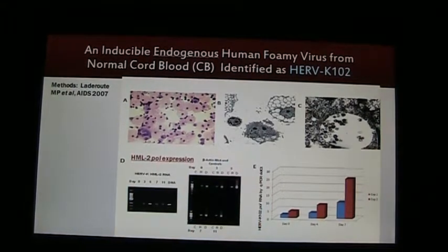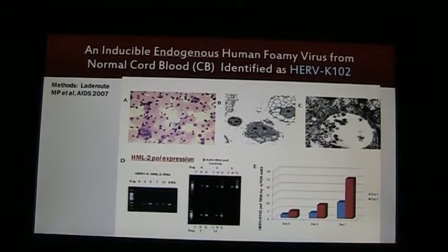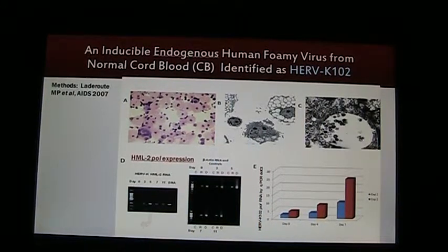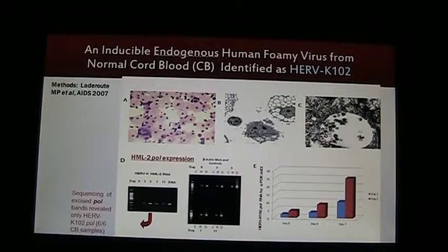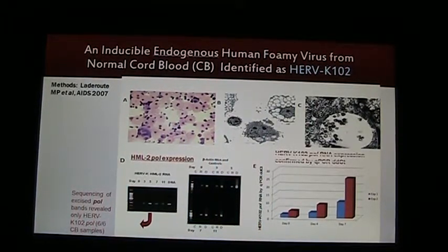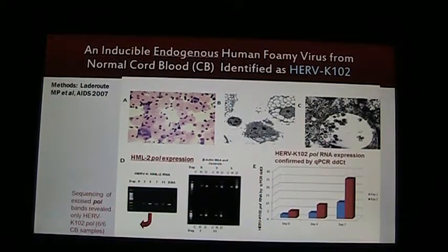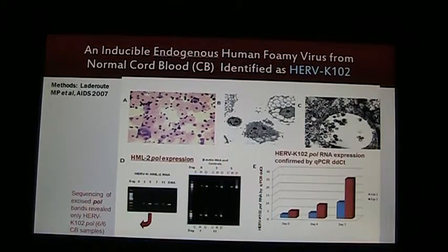In panel D, you'll see there's DNA also with the same signal, which implies that it is found in the human genome. We took day 5 samples from 6 out of 6 cord blood samples, excised and sequenced them, and found only HERVK102 pol sequences. Later, we developed a real-time PCR methodology and confirmed that HERVK102 pol RNA becomes very highly expressed over the 7 days of culture.